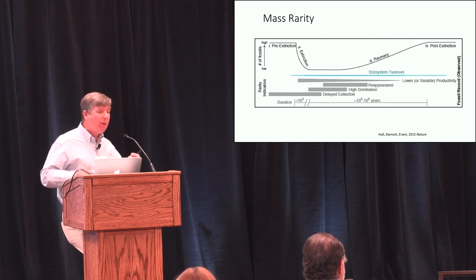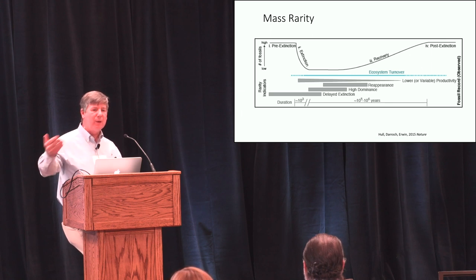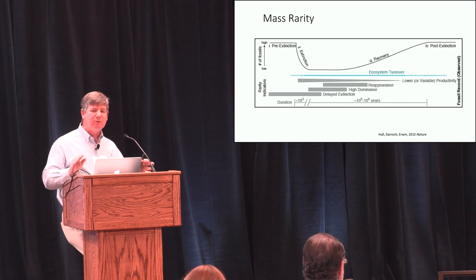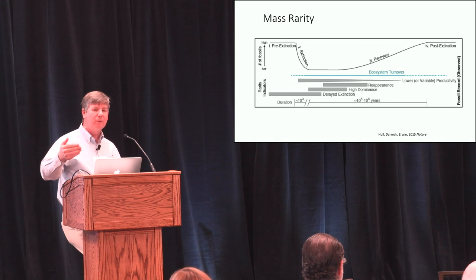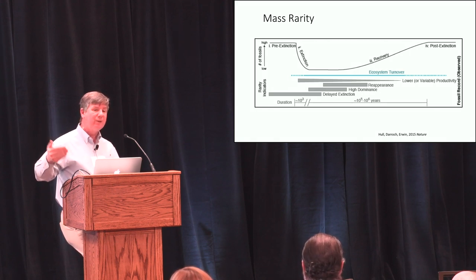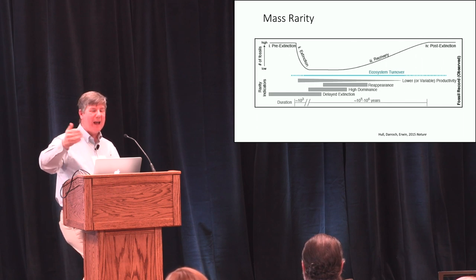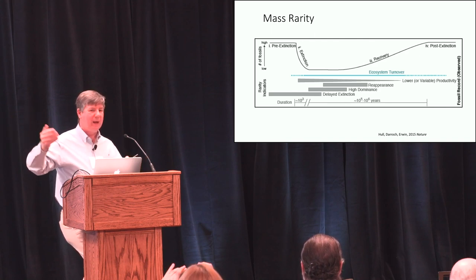Lots of bad things happen. The question is: what is the dynamic of that process, and how does that dynamic of the extinction influence what happens afterwards? The so-called recovery — which is a misnomer — takes a minimum of five million years after this event. There are new taxa that show up soon after the end of the extinction, but normally functioning ecosystems take about five million years. Partly that's because there are a series of other insults happening during that five million years — it's not like this is the end of the bad stuff and then things get better.